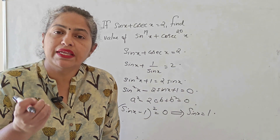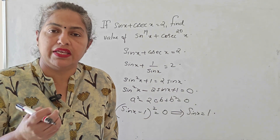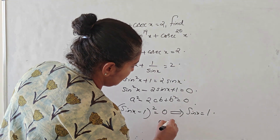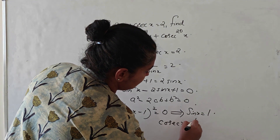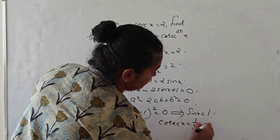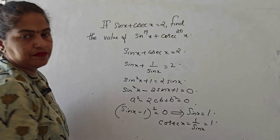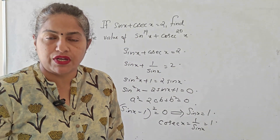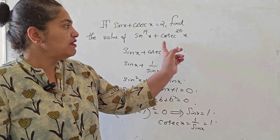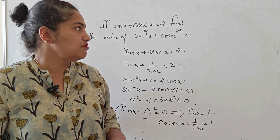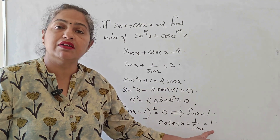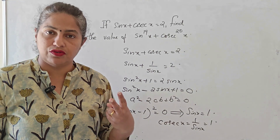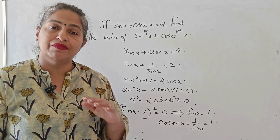Since sin x = 1, cosec x = 1 (its reciprocal). Therefore sin¹⁹x = 1¹⁹ = 1 and cosec²⁰x = 1²⁰ = 1. So the final value is 1 + 1 = 2.